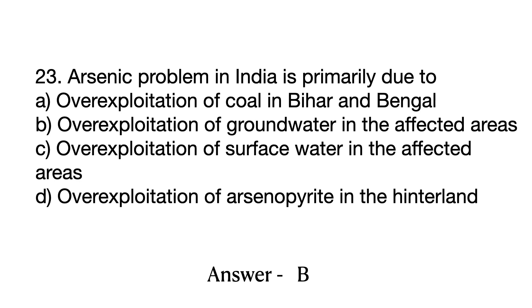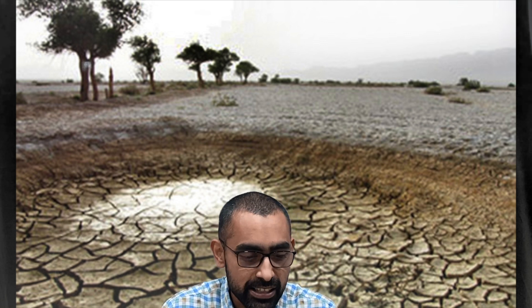Question number 23 is about the arsenic problem. There are a lot of problems when it comes to water, and there are different kinds of pollutants. Since we are at many places directly using water from ring wells and tube wells for drinking, a lot of pollutants are entering the body and resulting in diseases. These fine particulate matter are present in groundwater, and overexploitation of groundwater escalates the whole proportion. So the answer is overexploitation of groundwater in the affected areas where arsenic is found.